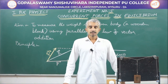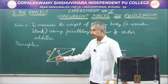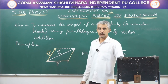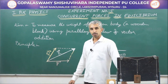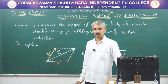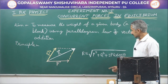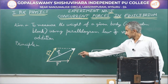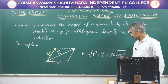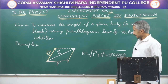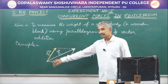We have studied in the chapter of motion in a plane that the resultant of two vectors can be given by the diagonal of a parallelogram. If you represent two vectors acting simultaneously at a point by two sides of a parallelogram, then the diagonal gives the resultant of that vector. Mathematically, the magnitude of the resultant vector can be written as R = √(P² + Q² + 2PQ cosθ), where θ is the angle between P and Q, and P and Q are the magnitudes of the vectors.